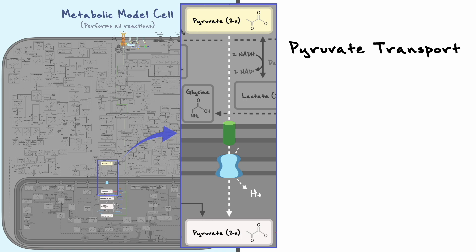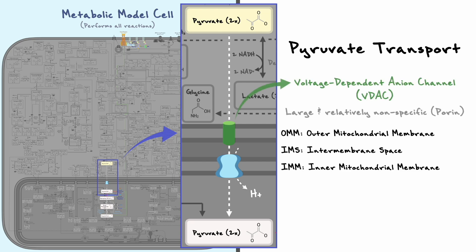As you can see, the mitochondrion has two membranes, an outer and inner membrane, which creates an intermembrane space between them. To cross the outer membrane, pyruvate first goes through the voltage-dependent anion channel, or simply VDAC. This ion channel has a large pore and is relatively nonspecific, and as such, it basically acts as a hole in the mitochondria. Now, to cross the inner membrane, pyruvate goes through the mitochondrial pyruvate carrier along with the hydrogen ion.